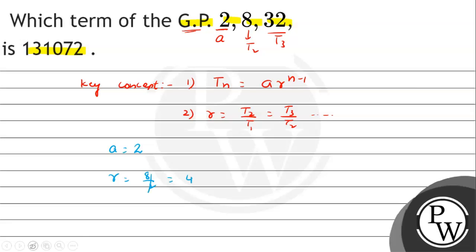We are given that the nth term equals 131,072. So we set up the equation: tn = a·r^(n−1) = 131,072.